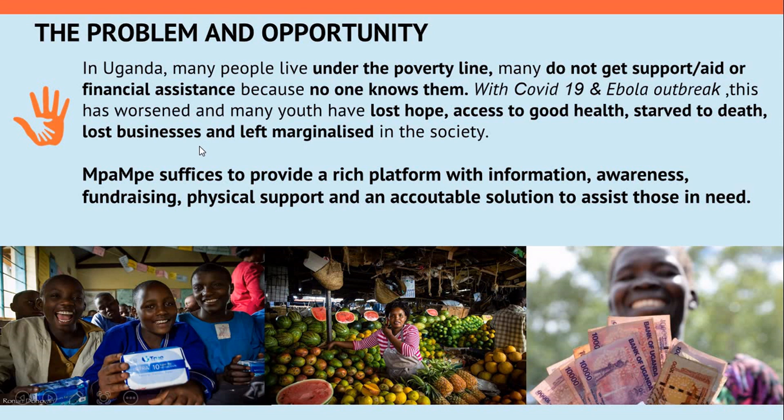In Uganda, many people live under the poverty line. Many do not get support, aid, or financial assistance because no one knows them. With COVID-19 and more recently the Ebola outbreak, this has worsened. Many youth have lost hope, access to good health, starved to death, lost businesses, and others are left marginalized in society, on top of the unemployment that is widespread around Uganda.